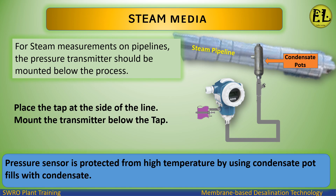Steam Media: For steam measurements on pipelines, the pressure transmitter should be mounted below the process. Place the tap at the side of the line and mount the transmitter below the tap. The pressure sensor is protected from high temperature by using a condensate pot filled with condensate.